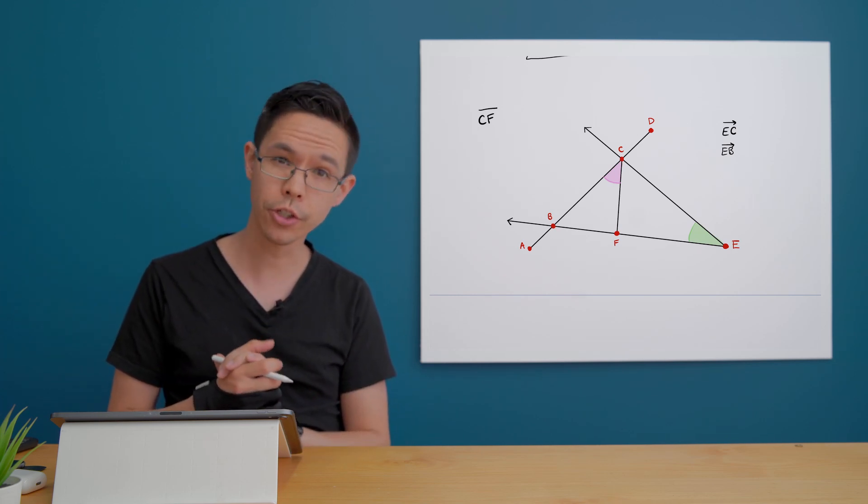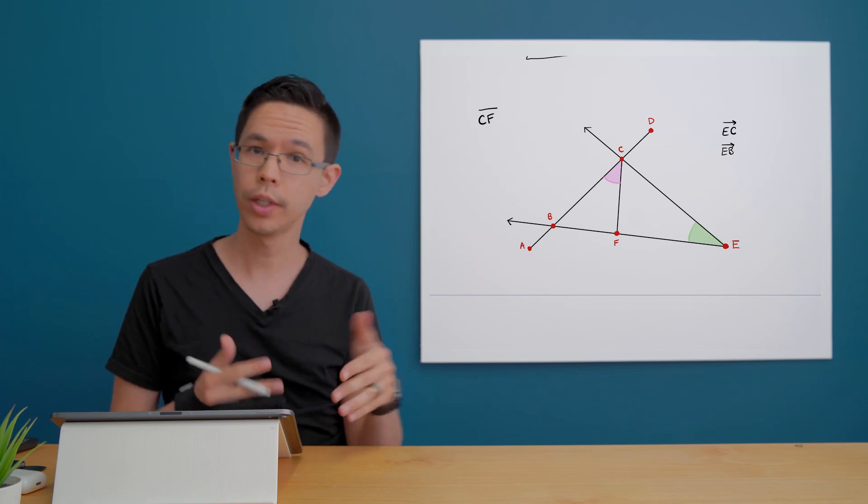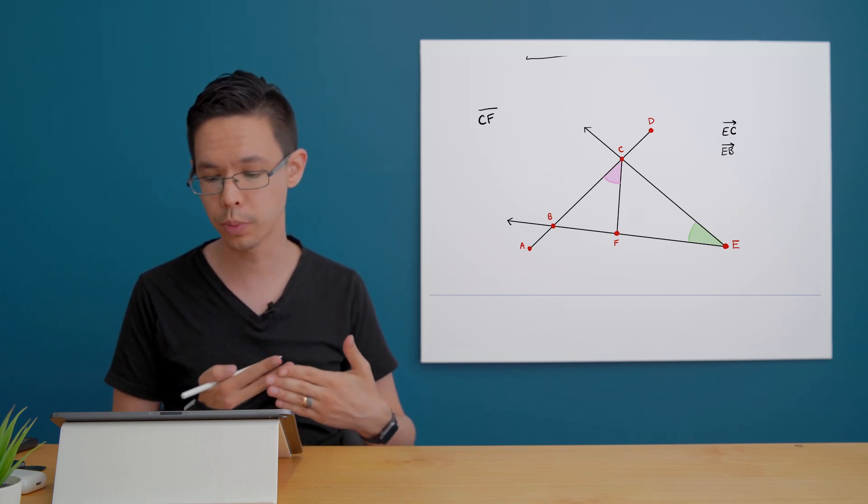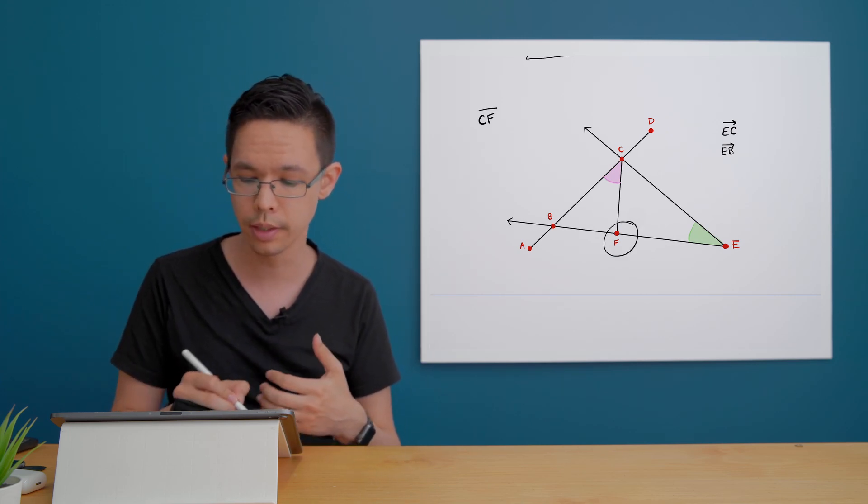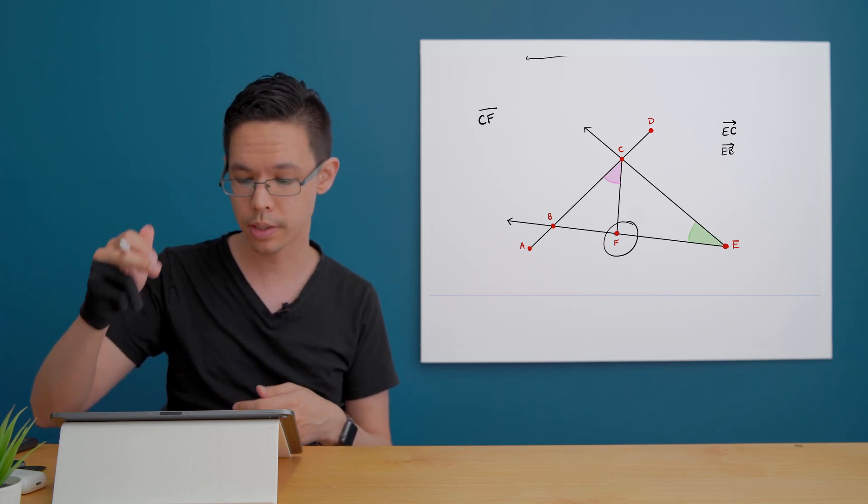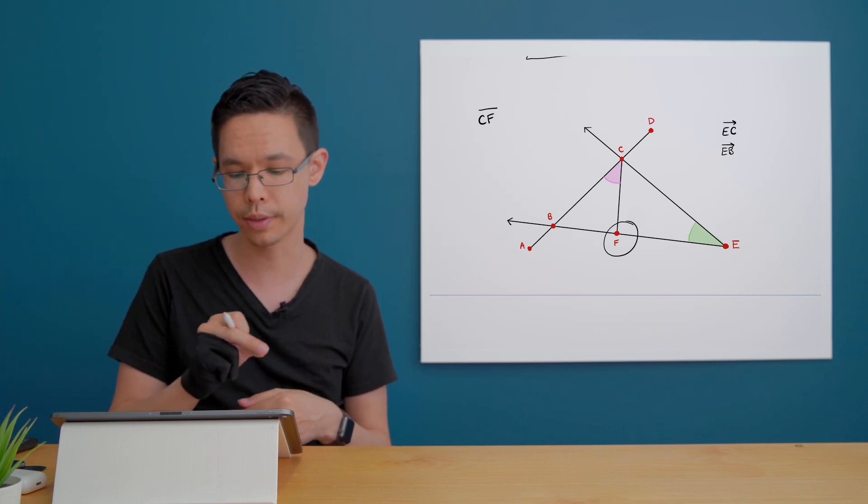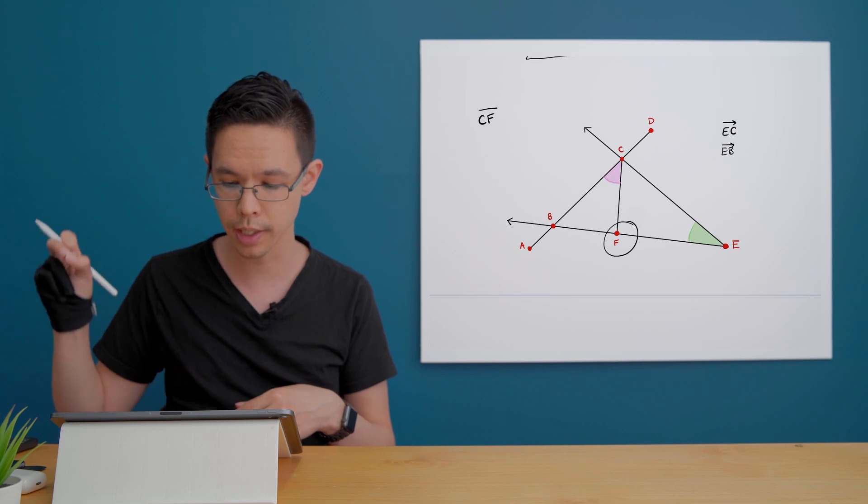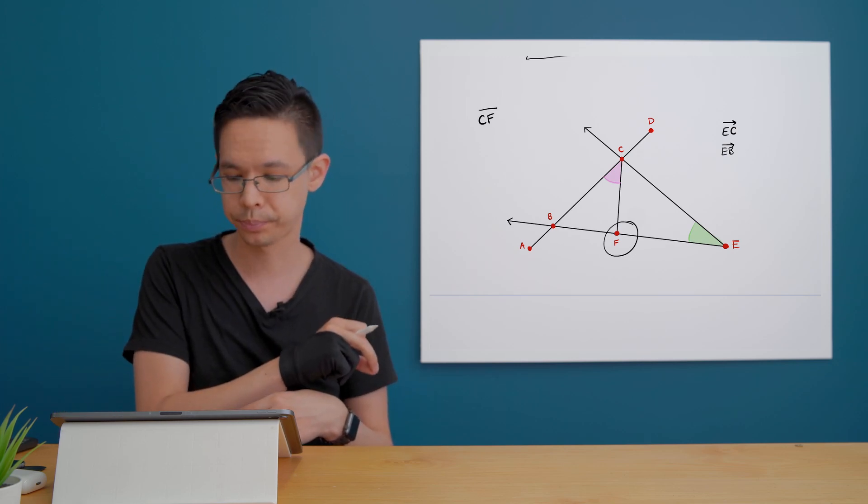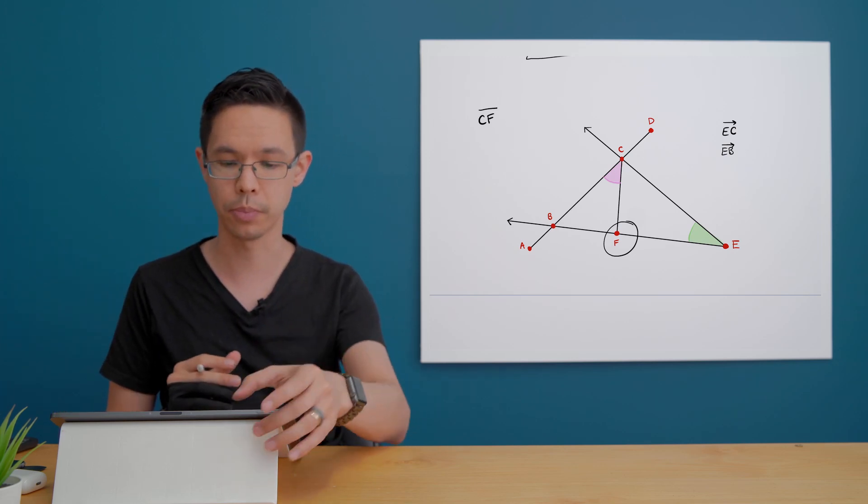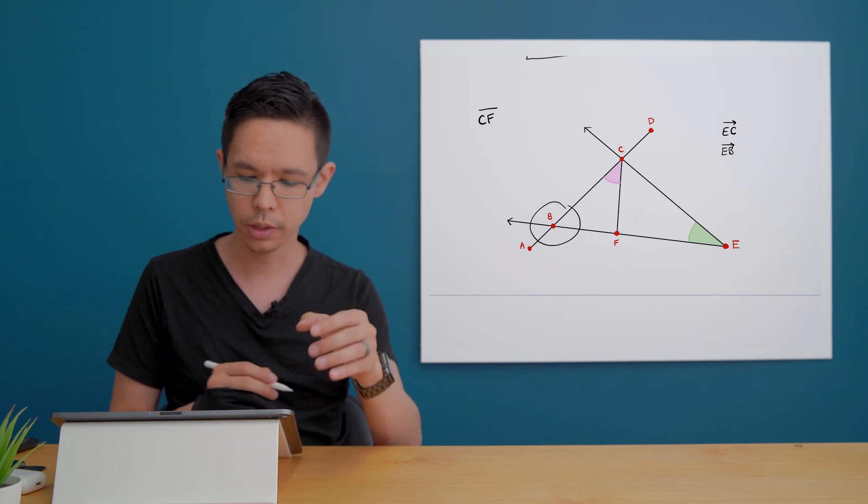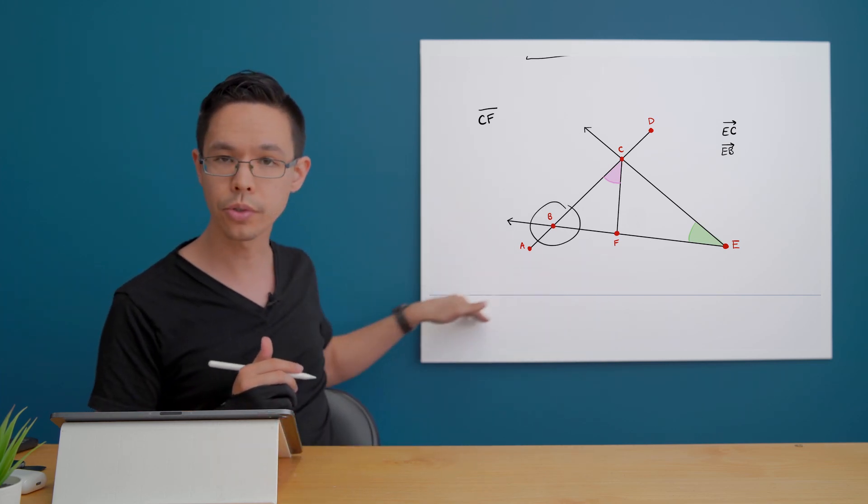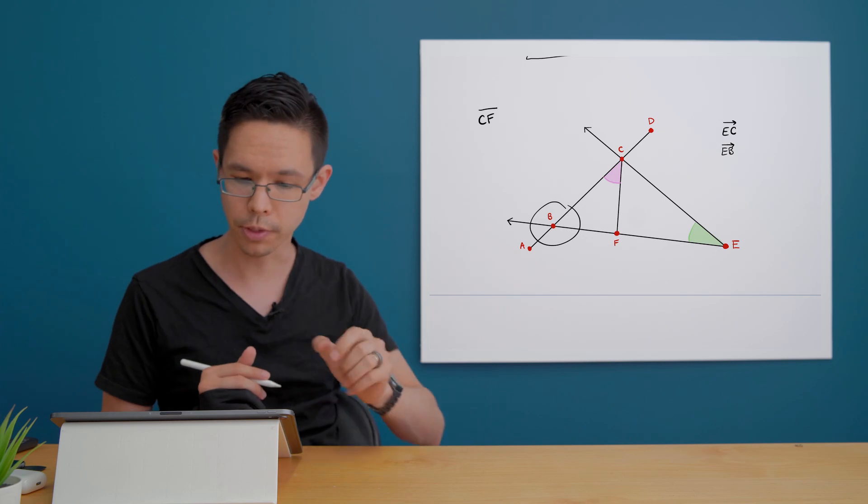Do we have intersection points? And intersection points are where two things meet. We definitely do. We have an intersection point right here where the segment C, F meets with the ray E, F, B. So that's definitely an intersection point. We also got one over here where these two straight lines meet together as well.